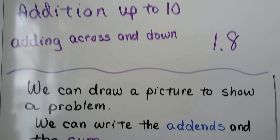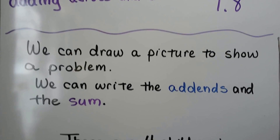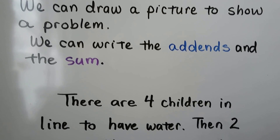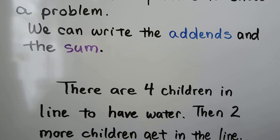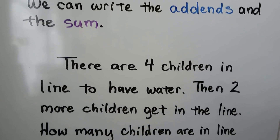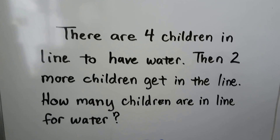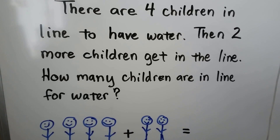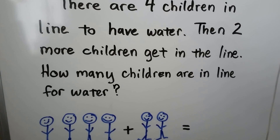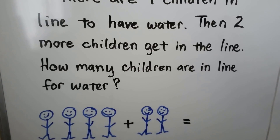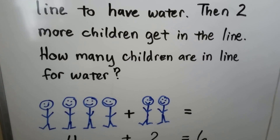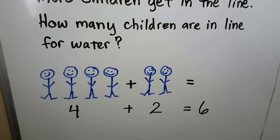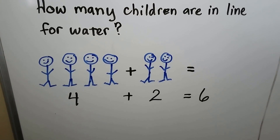We can draw a picture to show a problem. We can write the add-ins and the sum. There are four children in line to have water, then two more children get in the line. How many children are in the line for water?